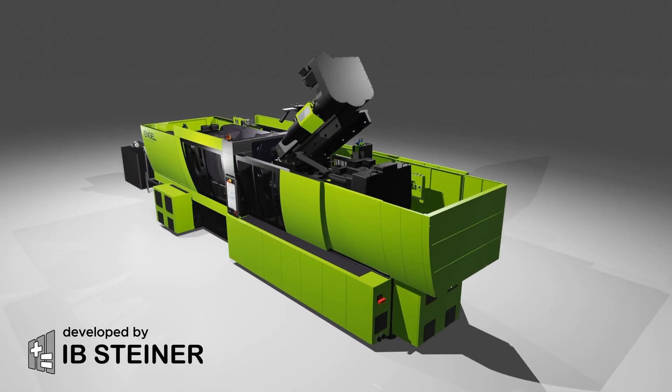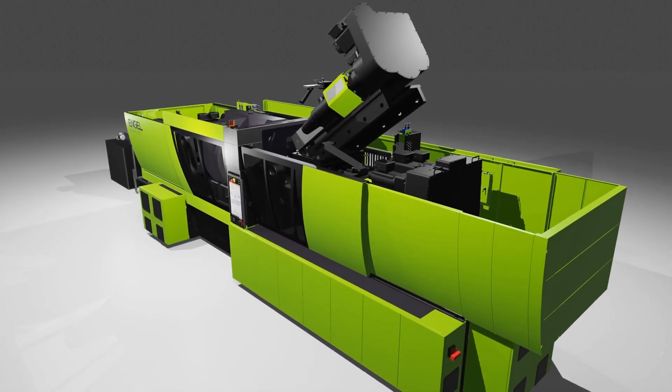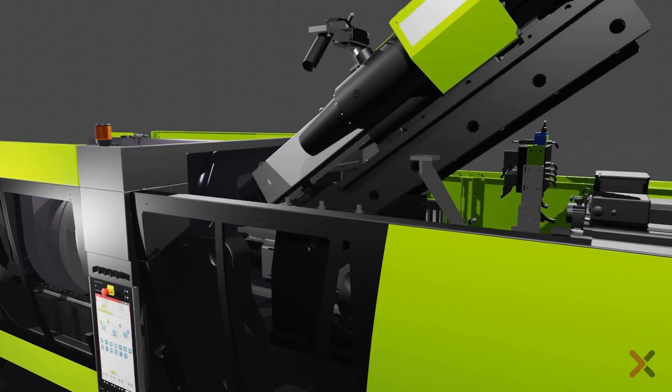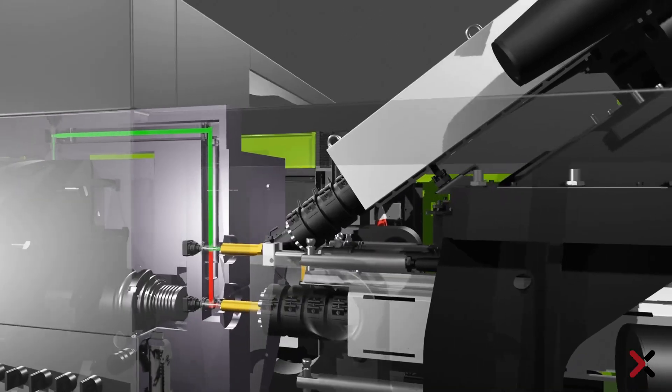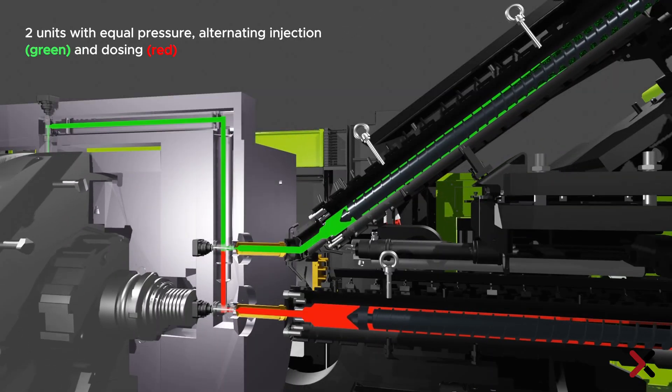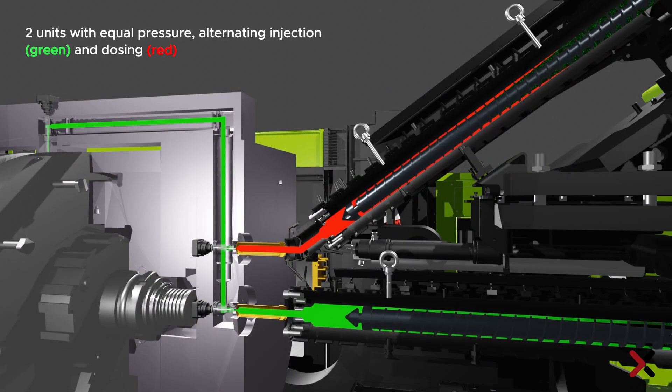In order to ensure a continuous melt flow for continuous production, two injection units are required in this case, which alternately dose, colored in red here, and inject, colored in green here.